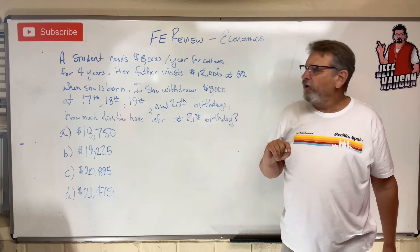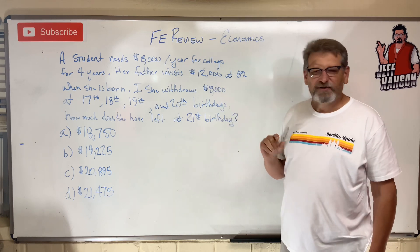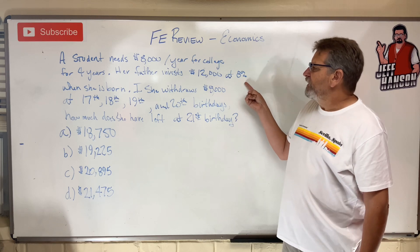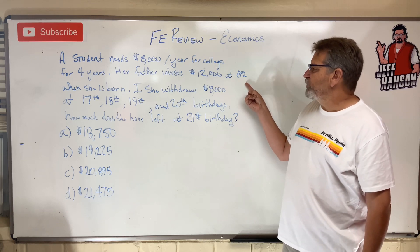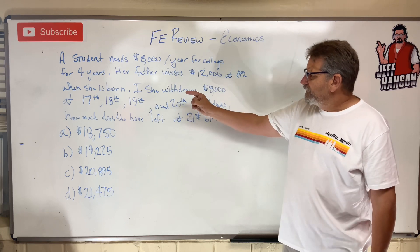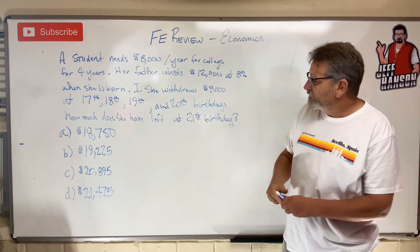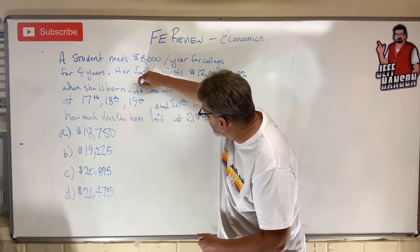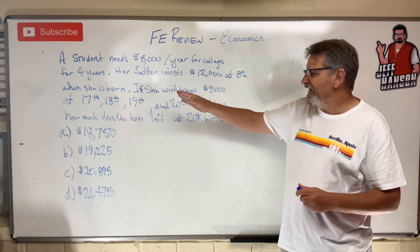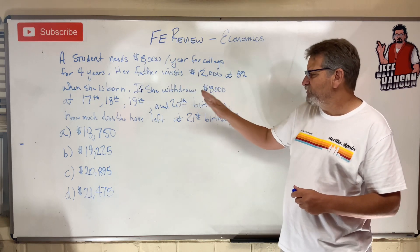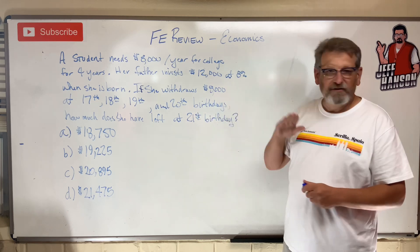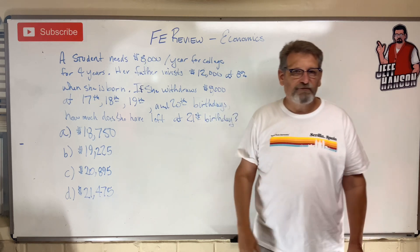A student needs $8,000 a year for college — must have been a long time ago — for four years. Her father invests $12,000 at 8% when she was born. If she withdraws $8,000 at her 17th, 18th, 19th, and 20th birthdays, how much will she have left after her 21st birthday?